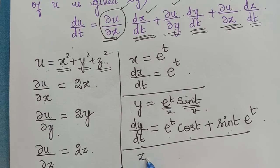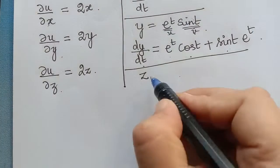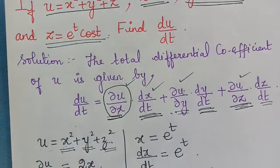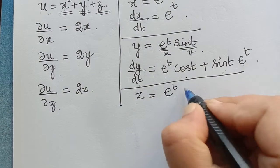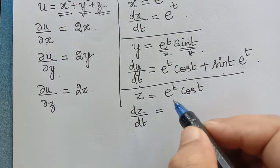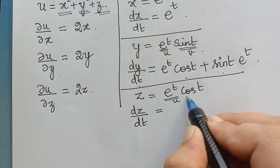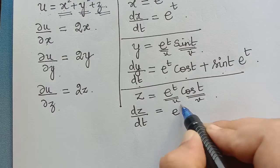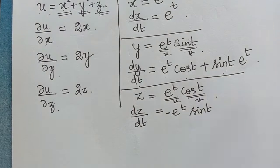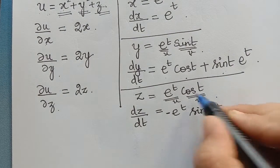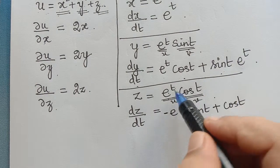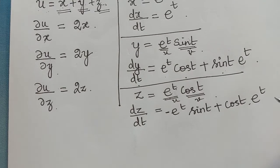In a similar manner, we should find dz/dt. z is given as e to the power t cos t. So we have to find dz/dt. Using the product rule: e to the power t as it is, differentiation of cos t is negative sine t, so we write negative sine t in front, plus cos t as it is multiplied by differentiation of e to the power t which is e to the power t itself.